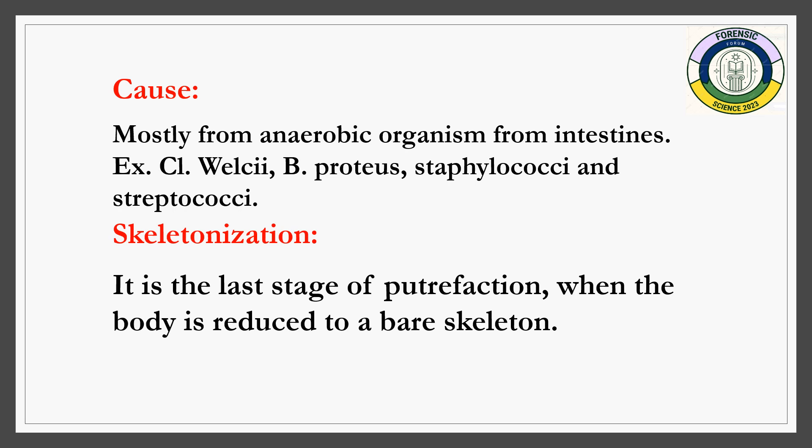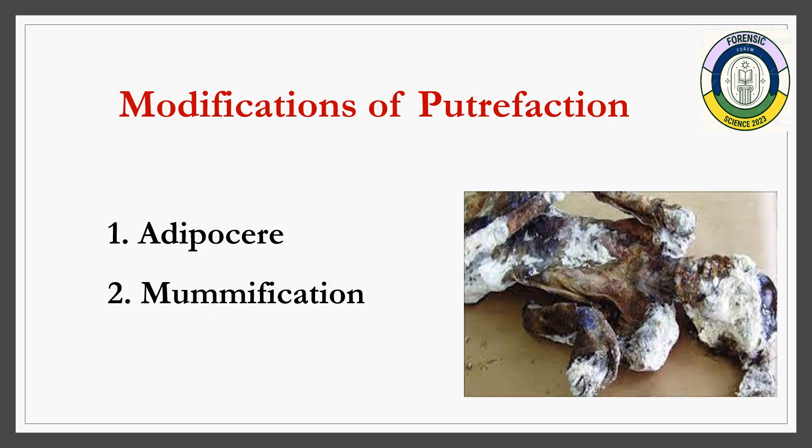The last stage of putrefaction is skeletonization, after which only skeletal remains are found. There are two modifications of putrefaction: adipocere formation and mummification. Adipocere formation, also called saponification, is the formation of white or gray, wax-like, grease-like material similar to soap, occurring in the fatty tissue of the dead body. Environmental conditions required are hot and moist.